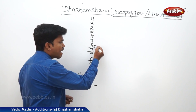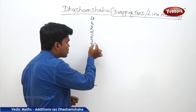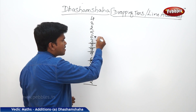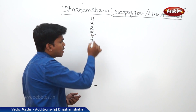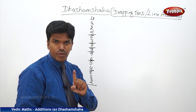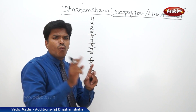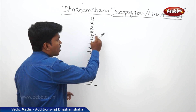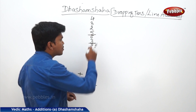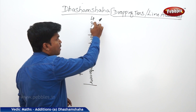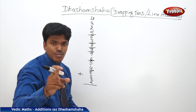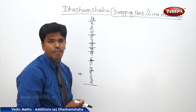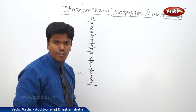4 plus 8? 12. Again more than 10, so drop a 10. Remaining is 1. Carry immediately that 1 to the next number. Whatever the number, after dropping 10, you need to carry to the next number. 1 plus 5? 6. 6 plus 2? 8. 8 plus 3? 11. More than 10, so again drop a 10. Remaining is 1. What is 1 plus 4? 5. Lastly, what is the remaining you got? 5.